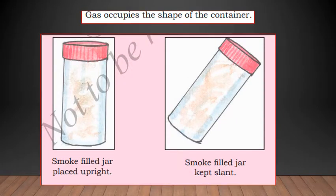Next, gas occupies the shape of the container. Smoke filled in a jar that is placed upright and smoke filled in a jar that is kept slanting - you can see that the shape of the gas or the smoke that is filled inside the container does not change. It shows that the gas occupies the shape of the container itself.